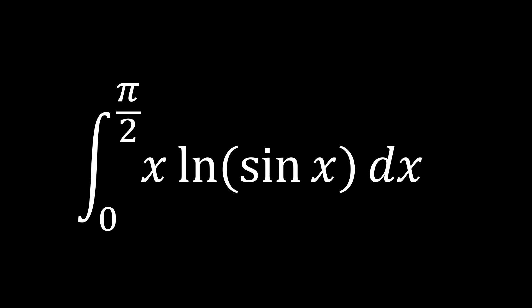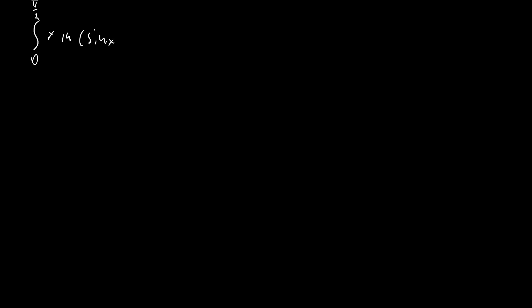This integral is actually from the Cambridge Integration Bee, one that I've done many integrals on in the past, as you all know. It's the integral from 0 to π/2 of x ln(sin x) dx. And it looks like we should just use the same substitution u = π/2 − x that we use when this x isn't here.